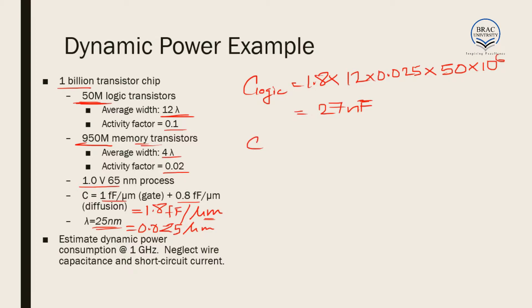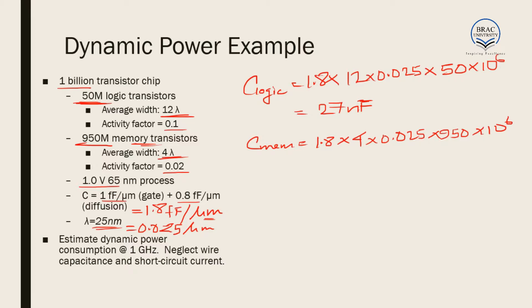For memory transistors, the capacitance is 1.8 fF/μm × (4 × 0.025 μm), multiplied by 950 × 10⁶ transistors. After calculation, the total capacitance for memory transistors is 171 nanofarads.